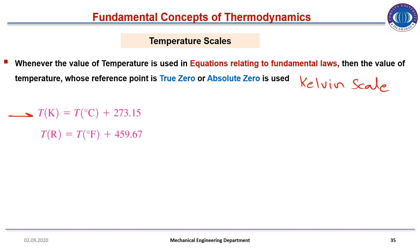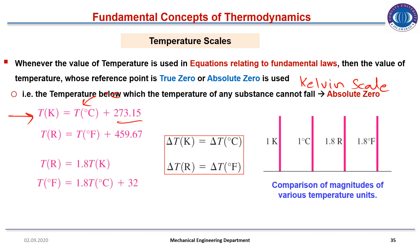The thermodynamic temperature scale is independent of the properties of any substance — this is the Kelvin scale or Rankine scale. Whenever temperature values are used in fundamental law equations, the absolute scale (Kelvin or Rankine) must be used. To convert: add 273 to Celsius for Kelvin. The difference between Kelvin and Celsius scales is the same numerical value, and similarly the difference between Rankine and Fahrenheit scales is the same. Conversion relations between Rankine, Kelvin, Fahrenheit, and Celsius scales were also shown.